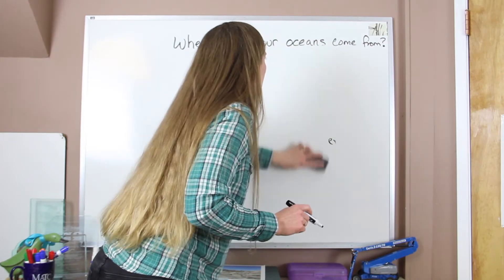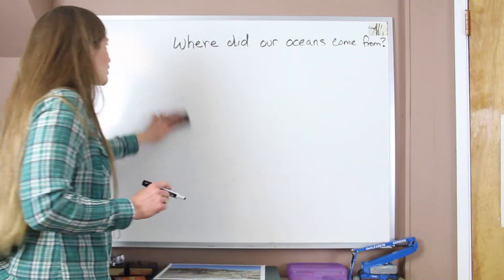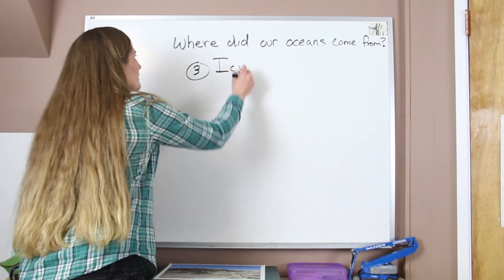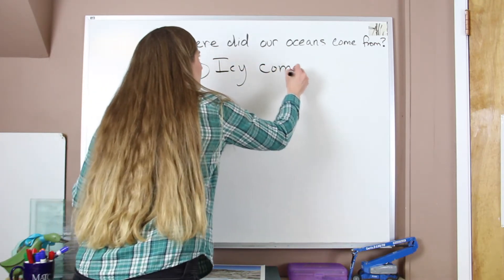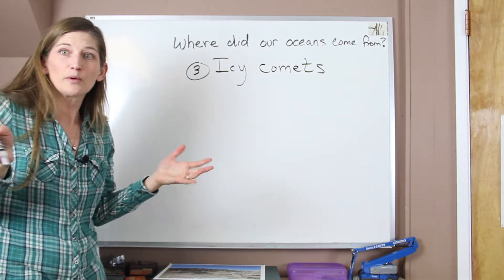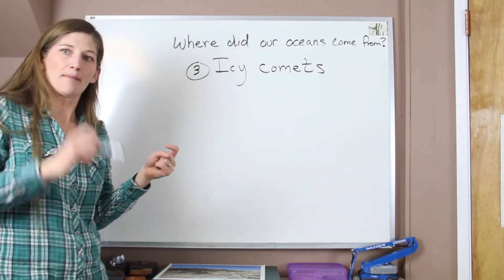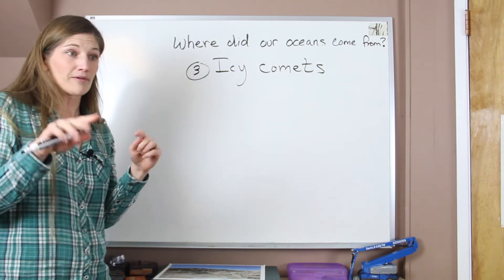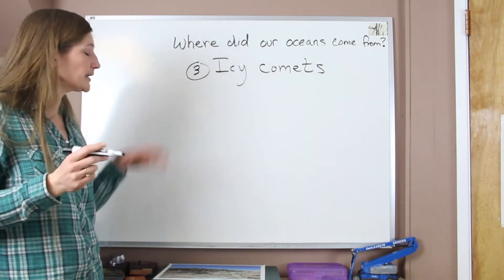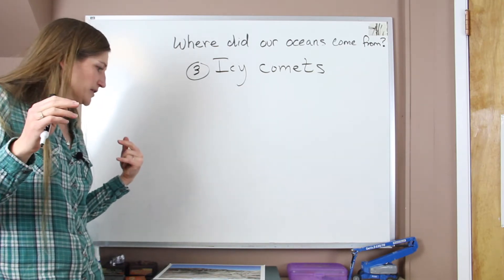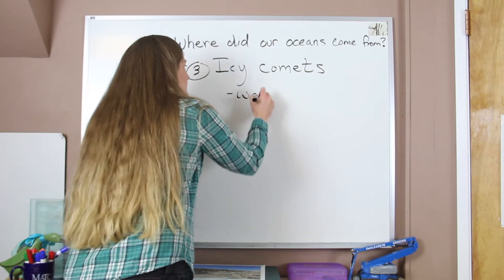And our last potential source for water would be from our icy comets. Now comets have different orbits when we look at the solar system. They're elliptical, they kind of come in and out of the solar system over time, and they do occasionally make contact with our planets within the solar system. So they do have lots of water ice present.